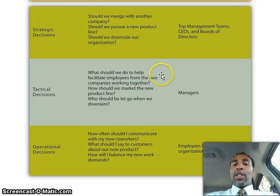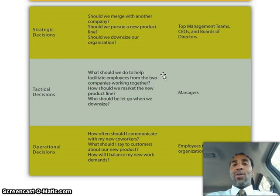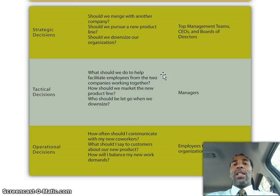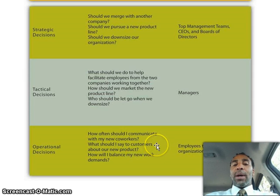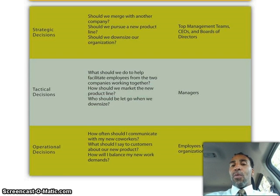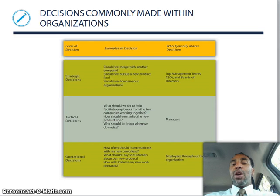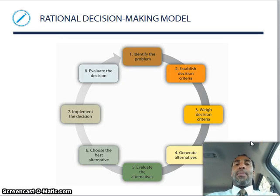Tactical decisions: what should we do to help facilitate employees from two companies working together? How should we market the new product line? Who should we let go when we downsize? Managers make those tactical decisions — for example, letting go of John who isn't performing versus keeping Pauline who is engaged and completes all her tasks. Operational decisions — how often should I communicate with my new coworker, what do I say to customers about a new product — are made by employees throughout the organization, and as a manager you help guide them.